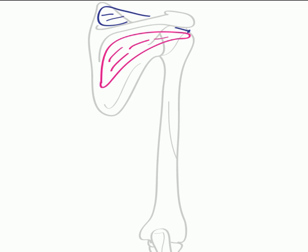Inferior to infraspinatus we have a further muscle that attaches to the greater tubercle and this muscle is known as teres minor. Here we can draw in teres minor. So on this posterior surface of the scapula we can see supraspinatus, infraspinatus and teres minor.